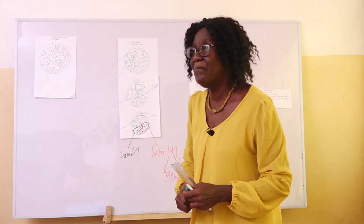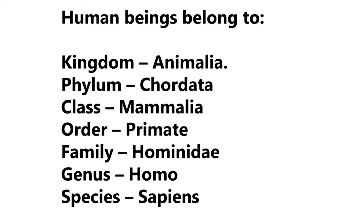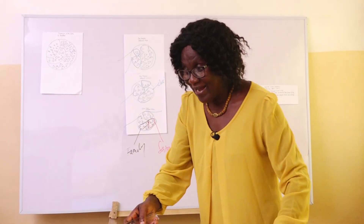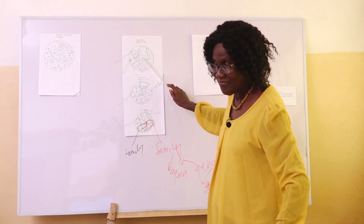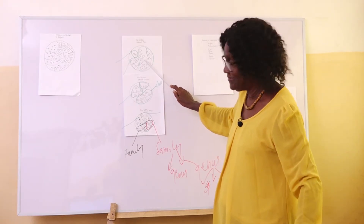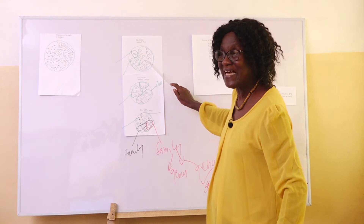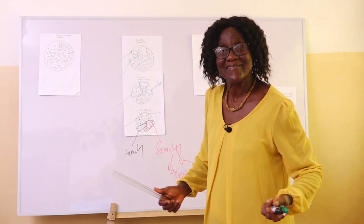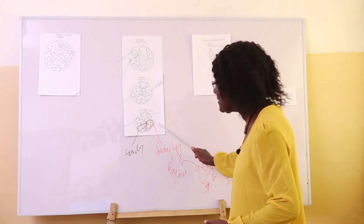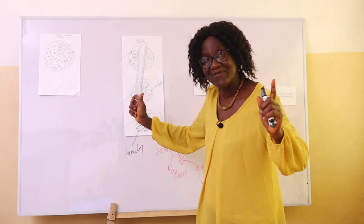Let's look at human beings. Human beings belong to kingdom Animalia, phylum Chordata, class Mammalia, order Primates, family Hominidae, genus Homo, species sapiens. In class Mammalia, there are other mammals like goats and cats, but as we go further down the hierarchy we separate, and finally each organism belongs to one species.